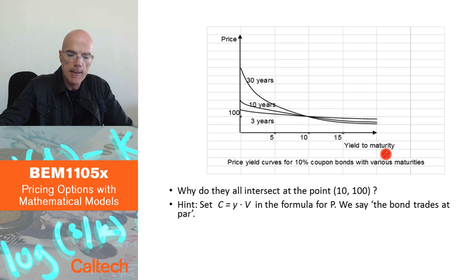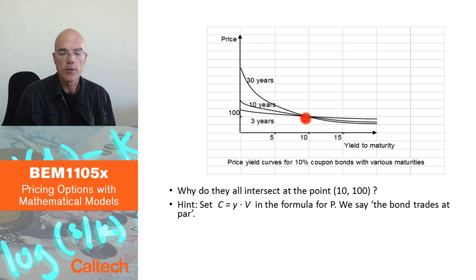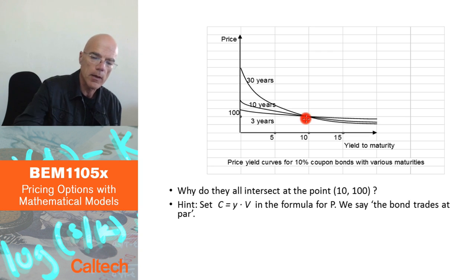What we can see here is that they all intersect at the point 10 and 100. So the question for you is why is there an intuition why all the bonds, 10% coupon bonds, would intersect at 10, 100? It means that if the yield, if the quoted yield today is 10% for that bond, the price is going to be 100 today also.